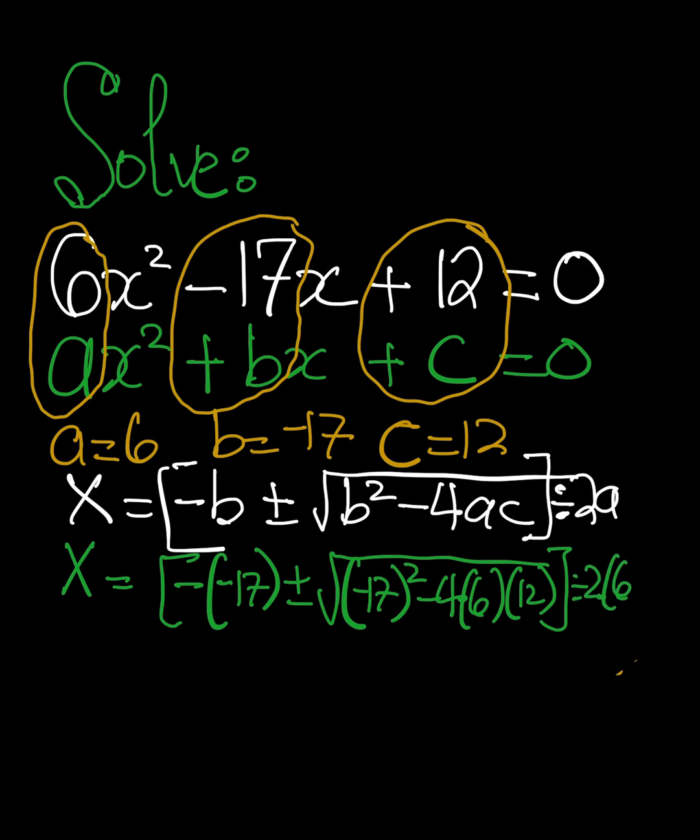Now we're going to have negative times negative 17 to be positive 17, plus or minus square root of negative 17 squared. That will give us 289. And then the minus is going to be there because 4 times 6 is 24 times 12 is going to give us 288. All divided by 12, because 2 times 6 is 12.